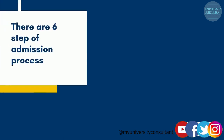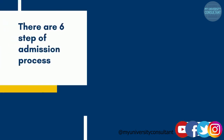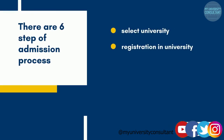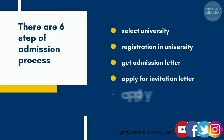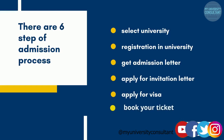There are six steps of the admission process. First step is select a university. Second step is registration in university. Third step is to get an admission letter. Fourth step is apply for an invitation letter. Fifth step is apply for visa. Sixth step is book your tickets.